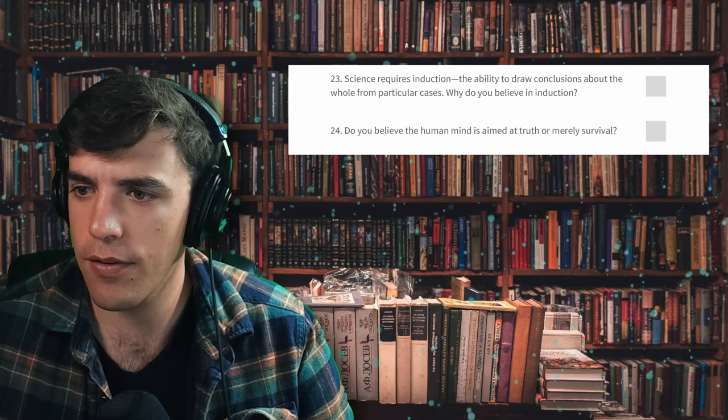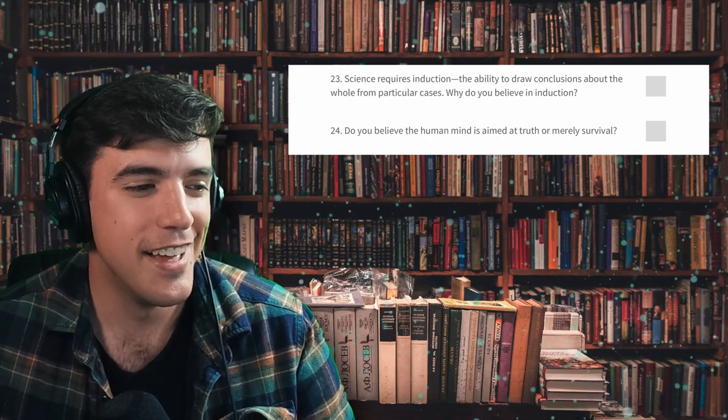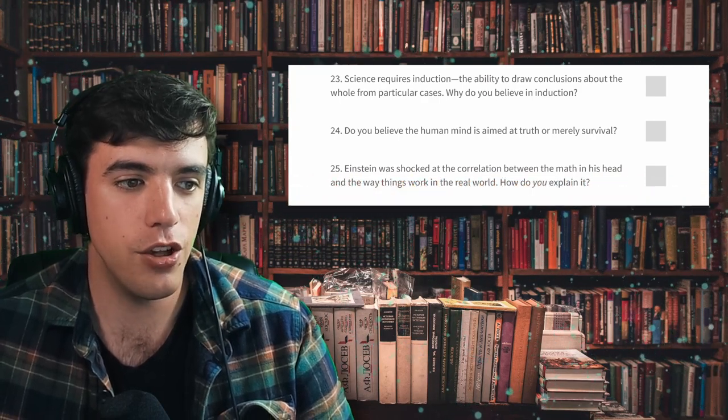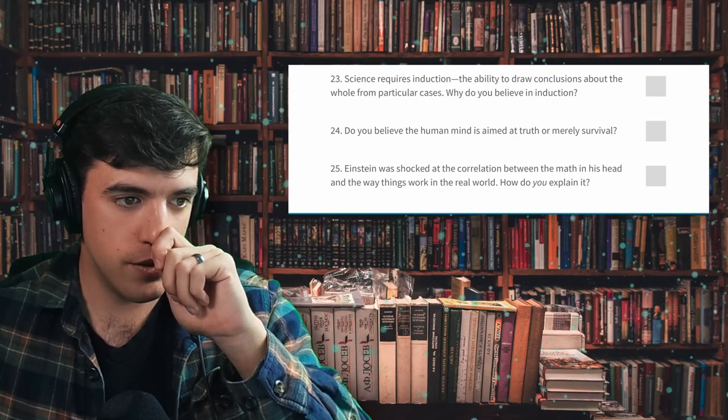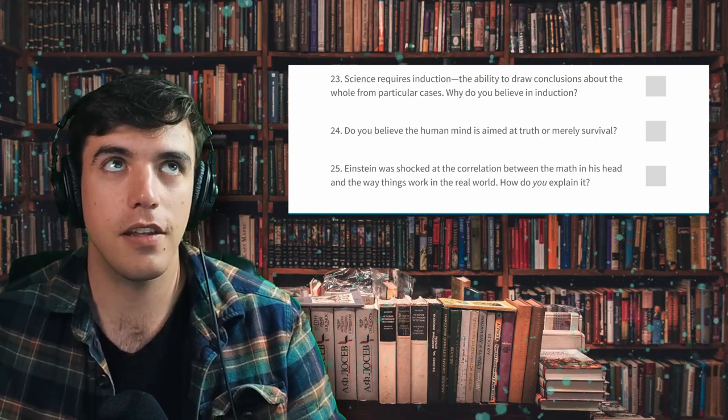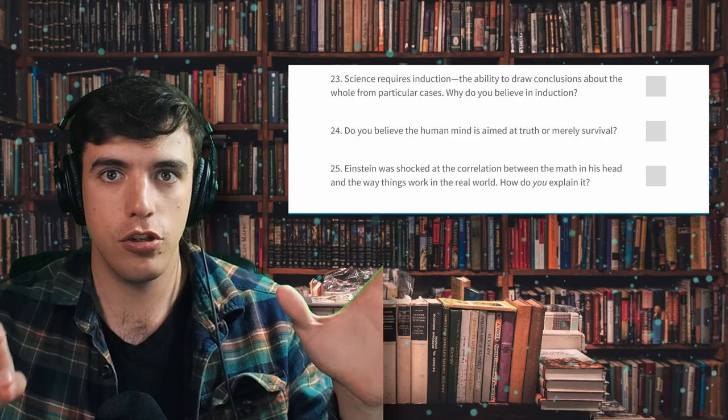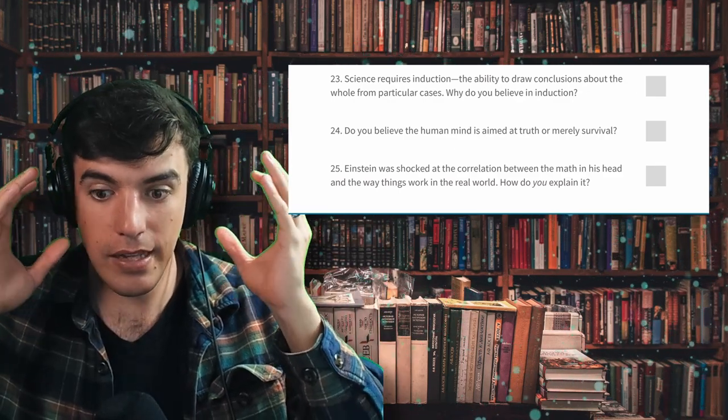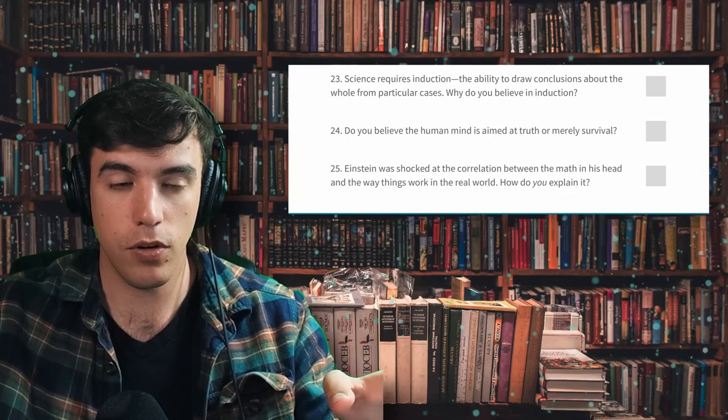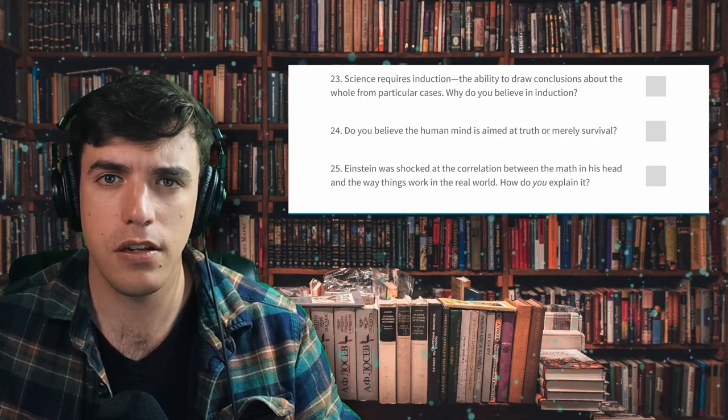And then the last one, I have rambled on for, I'm not even sure how long I've been recording for. 25. Einstein was shocked at the correlation between the math in his head and the ways things work in the real world. How do you explain it? Interesting question. It's like the idea that the math that we have in our heads, this abstract concept can be mapped perfectly to the world around us. How is it that this thing that's in our head, that's actually abstract, by our own definitions, it's abstract, it's non-physical. How is that able to be mapped to the real world? That's a deep question. Related to Einstein, if you don't know about this, look up Einstein's fudge factor. Real short story.